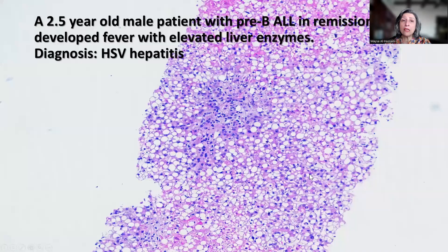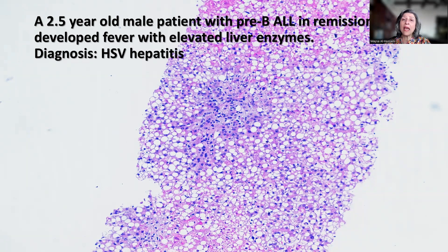The immunohistochemistry with positive nuclear staining supports the diagnosis of HSV infection in the liver. The final diagnosis in this case was HSV hepatitis. Remember, this has important implications on management — once the patient is started on antiviral treatment, there is a good chance for complete recovery. This case and another case were reported a few years back; you can find the link to the publication in the caption of the video. I hope you find this tip useful in your daily practice. Thank you.